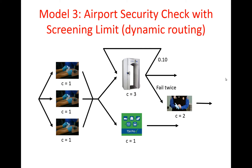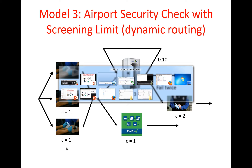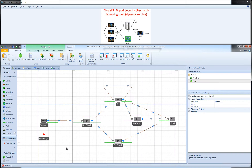Instead of having one server with three units of capacity, we're going to consider three separate server objects for the document check station. So let's go to Simio and see how we can implement this. This is our model from the previous video.